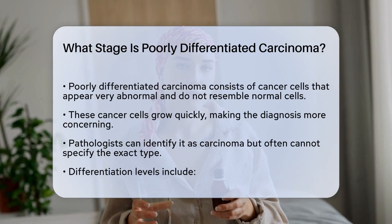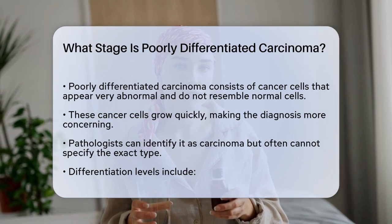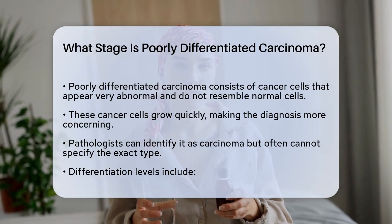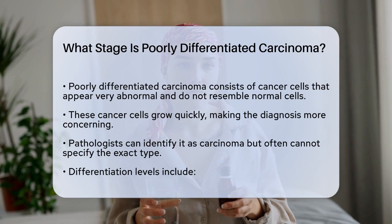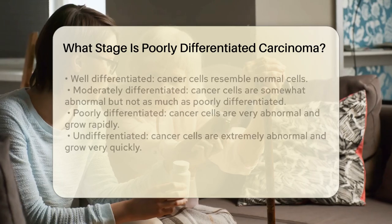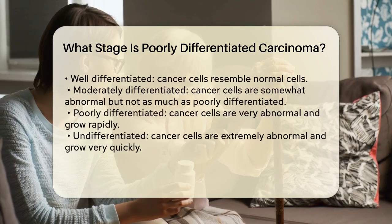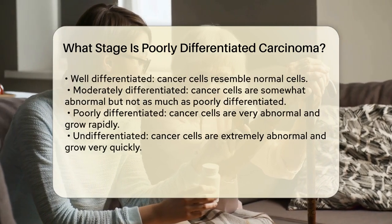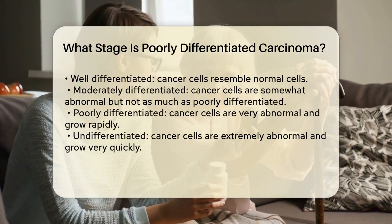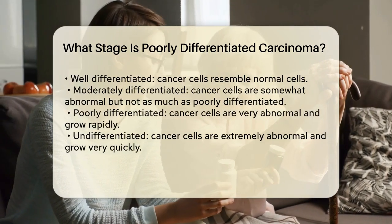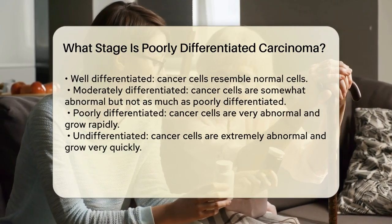The term 'poorly differentiated' refers to the degree of differentiation, which is how much the cancer cells resemble normal cells. In this case, the cells are significantly different from normal cells, indicating a more aggressive type of cancer.